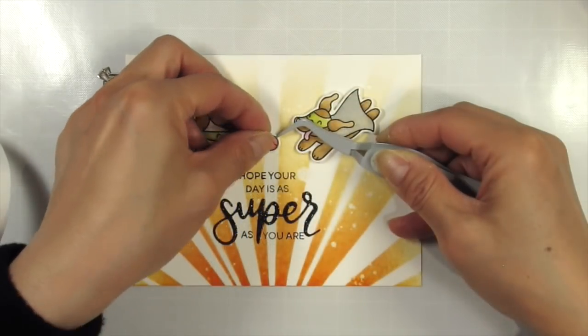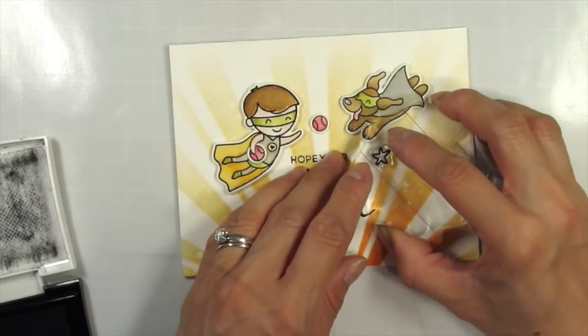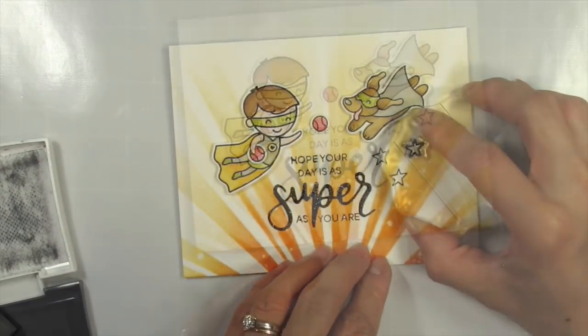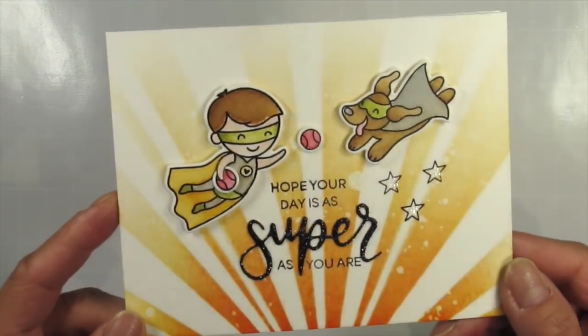I was going to leave the card this way but decided that I needed to balance the images by filling the empty space under the dog. So I stamped three of the outline stars directly on the panel. Then I used a spectrum noir sparkle pen to add some shimmer to the stars. And now my second card is done.